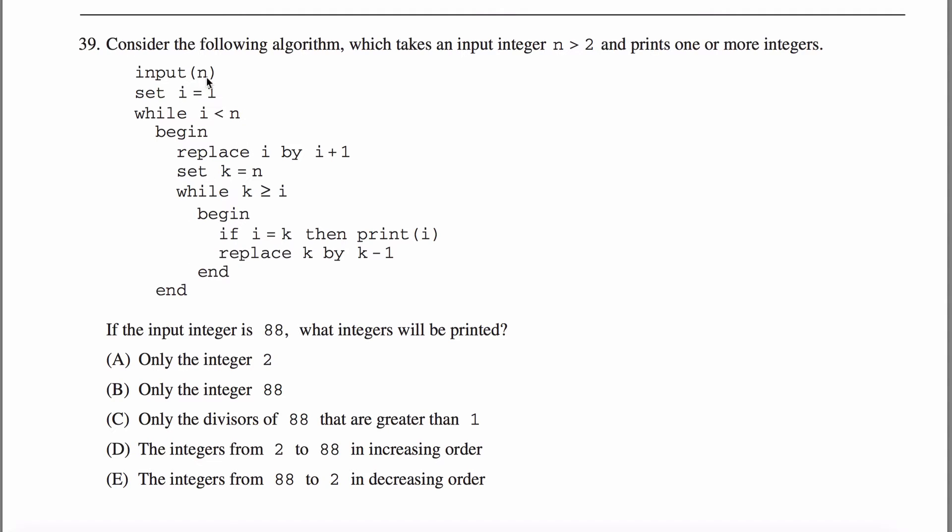If you glance at this algorithm, there's n's and there's i's and there's k's. So maybe that's what we should keep track of. Here's my n column, my i column, and my k column. And let's see what happens. If the input integer is 88, the input integer is n, so that means n is equal to 88.